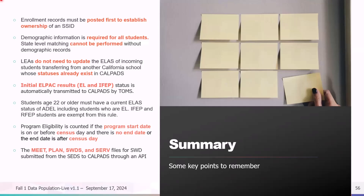Students aged 22 or older must have a current ELO status — a current status of ADEL — including students who are EL. IFEP and RFEP students are exempt from this rule. The ADEL status is in place because folks who are age 22 or older are not eligible to take the ELPAC. The IFEP statuses are results of the ELPAC that state English proficiency, so if they have gotten those results from the ELPAC, they can be exempt from that rule.